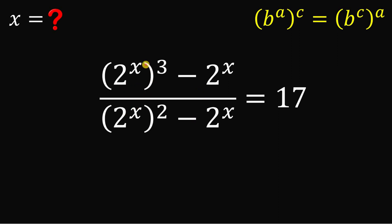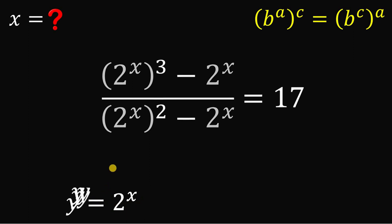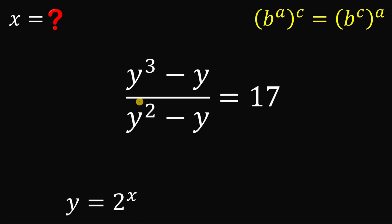Now take note that we have a common term of 2 raised to the power of x — we have 4 of them. So what we're going to do is replace 2 raised to the power of x with a single variable. Let y equal 2 raised to the power of x. We can now replace all 2 raised to the power of x with y. So we have y cubed minus y, all over y squared minus y, equals 17.